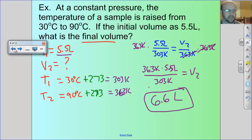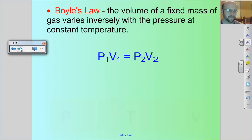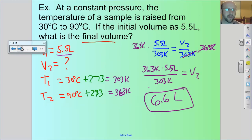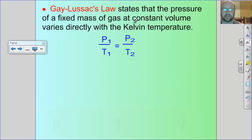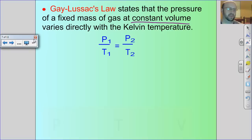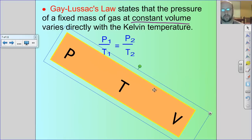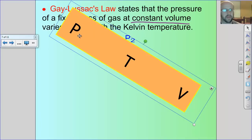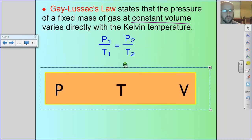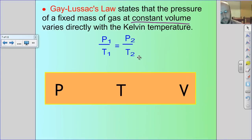The way I like to memorize which law is which is to remember what's constant in each. Boyle's Law has constant temperature. Charles' Law has constant pressure. And then we have our third law, Gay-Lussac's Law, which has constant volume. With constant volume, pressure and temperature increase together — they both go up at the same rate, or both go down together.